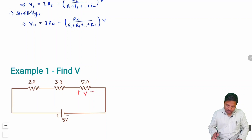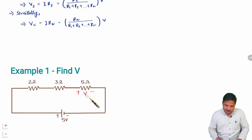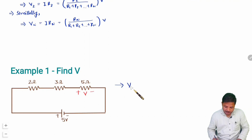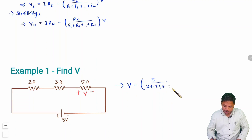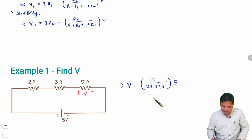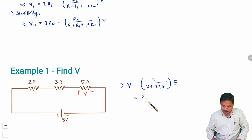Here is a question where resistances are connected in series with a 5V supply. We need to find the voltage across the 5Ω resistor. As per voltage divider rule, V = 5 / (2 + 3 + 5) × 5 = 5 × 5 / 10 = 25 / 10 = 2.5 volts.